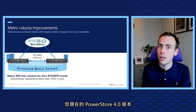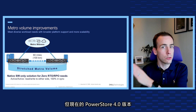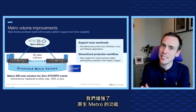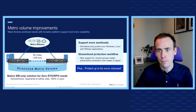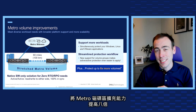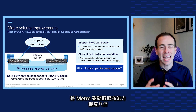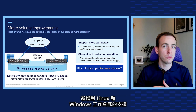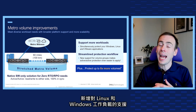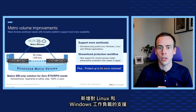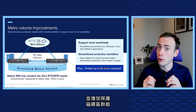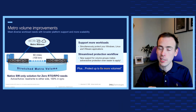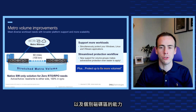Now in the PowerStore 4.0 release we're enhancing the functionality of native metro by increasing the scalability of metro volumes eight times, by adding support for both Linux and Windows workloads, and adding the ability to protect volume groups as well as individual volumes.